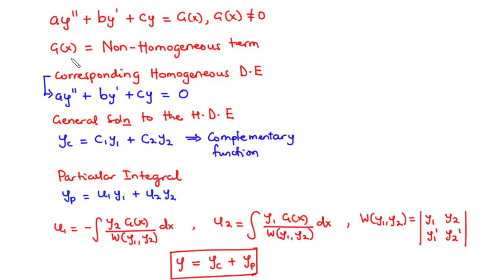The non-homogeneous term is g(x), that is the function on the right-hand side. To solve such a differential equation using the method of variation of parameters, we need to generate the corresponding homogeneous differential equation, where the left-hand side equals 0: a·y″ + b·y′ + c·y = 0. The next step is to find the general solution of this homogeneous equation, given by yc = c₁y₁ + c₂y₂, which we call the complementary function.